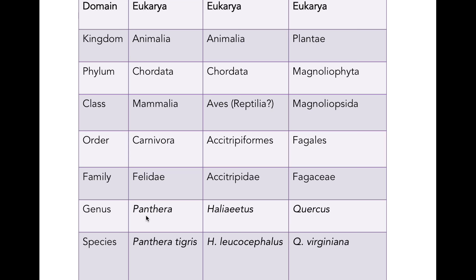At the generic level, we always italicize. The genus name we italicize, and the specific epithet — the second part of this binomen or two-part name — is also italicized, but it's always lowercase. So for a species name, that should always include both the generic name and the specific epithet. We don't just say the species is 'tigris' — the full species name is Panthera tigris.